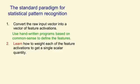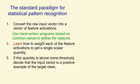What we learn is how to weight each of the feature activations in order to get a single scalar quantity. The weights on the features represent how much evidence the feature gives you in favour of, or against, the hypothesis that the current input is an example of the kind of pattern you want to recognise. When we add up all the weighted features, we get a total evidence in favour of the hypothesis, and if that evidence is above some threshold, we decide that the input vector is a positive example of the class of patterns we're trying to recognise.